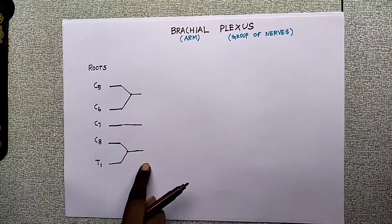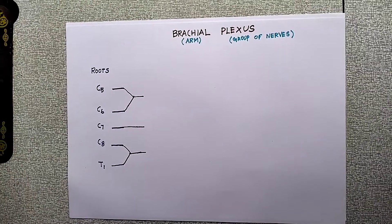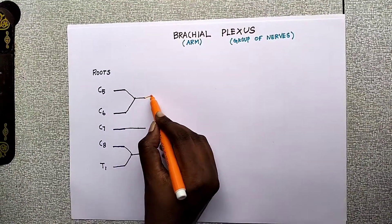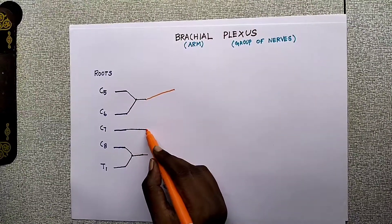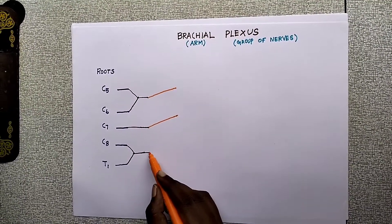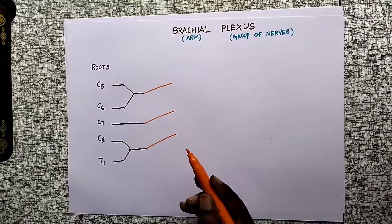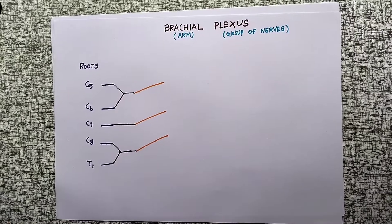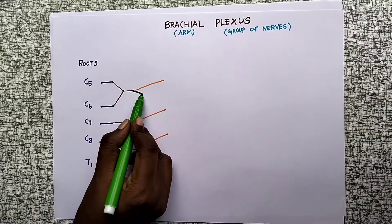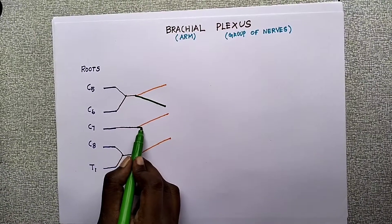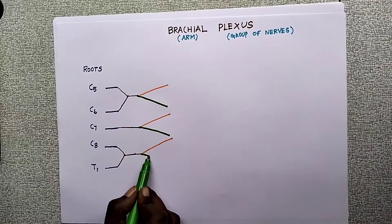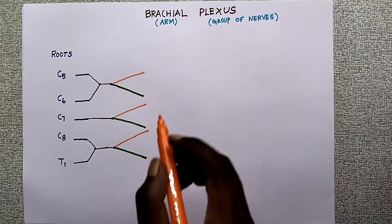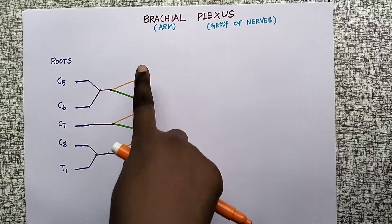There are three trunks: upper, middle, and lower. Each trunk gives anterior and posterior divisions. The anterior divisions are shown in orange. All three trunks give posterior divisions as well.